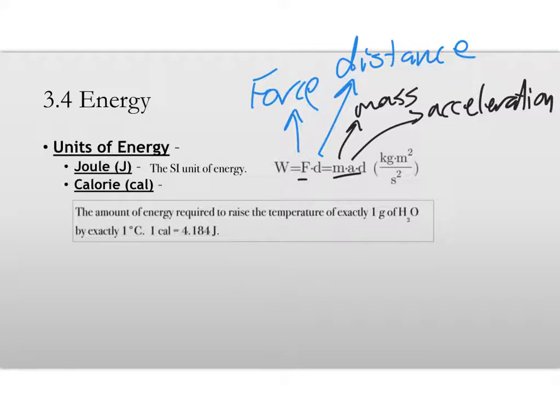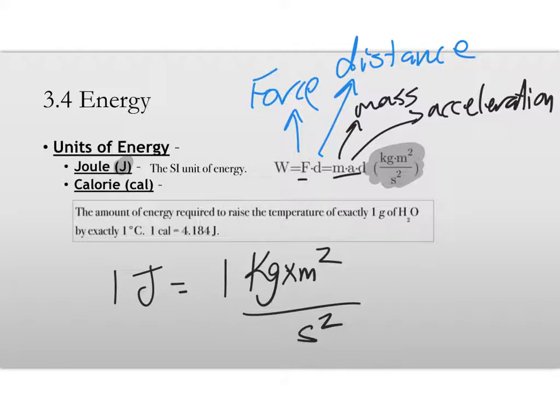The actual SI units for work are kilograms meters squared per second squared. We don't want to use that, so we use joules instead. One joule is equal to one kilogram times a meter squared per second squared.